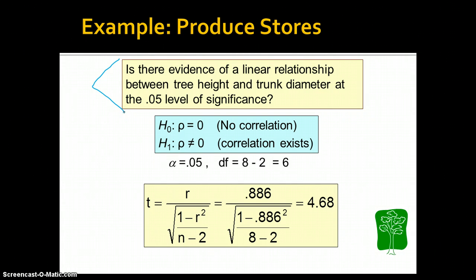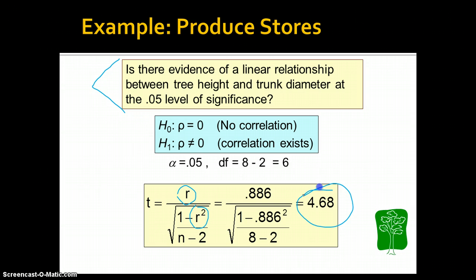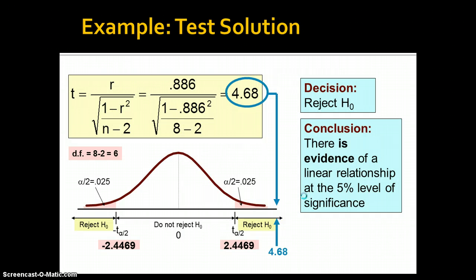So we can ask: is there evidence of a linear relationship between tree height and trunk diameter at the 0.05 level of significance? We can calculate what critical values are, and we can calculate what the actual probability, or p-value, is for our different test statistics. In this case, we're calculating a probability of committing a type 1 error using the correlation coefficient itself, and it comes up with a test statistic for us.